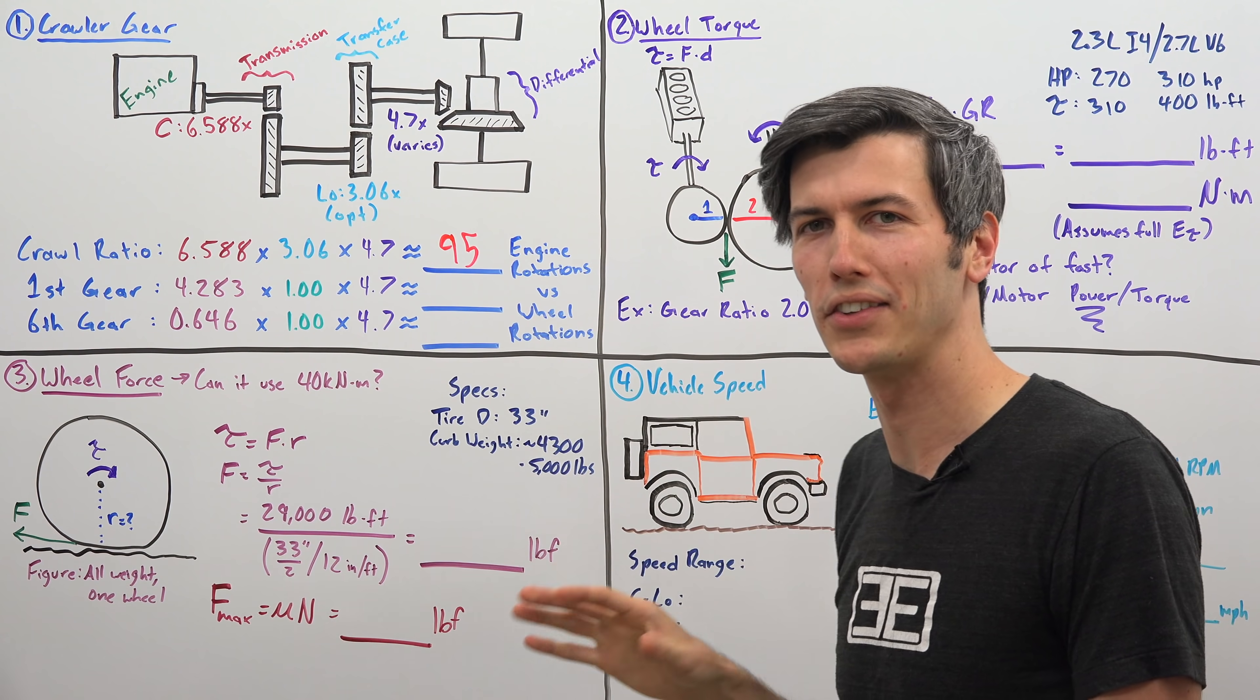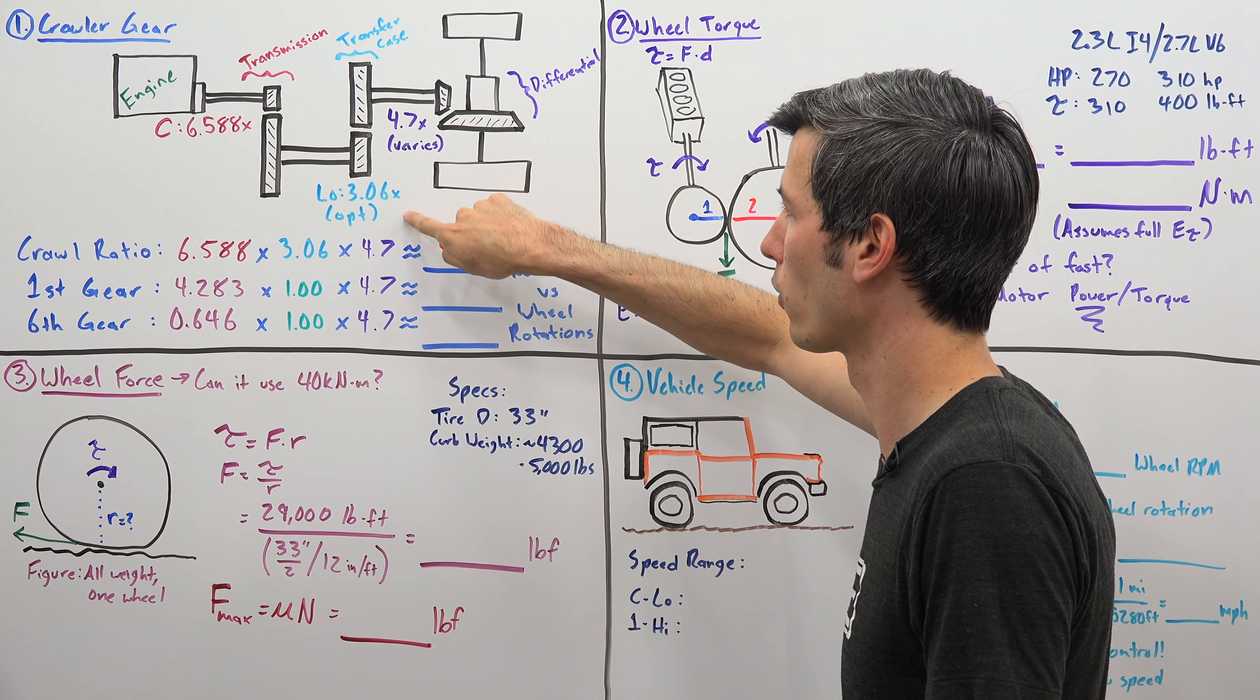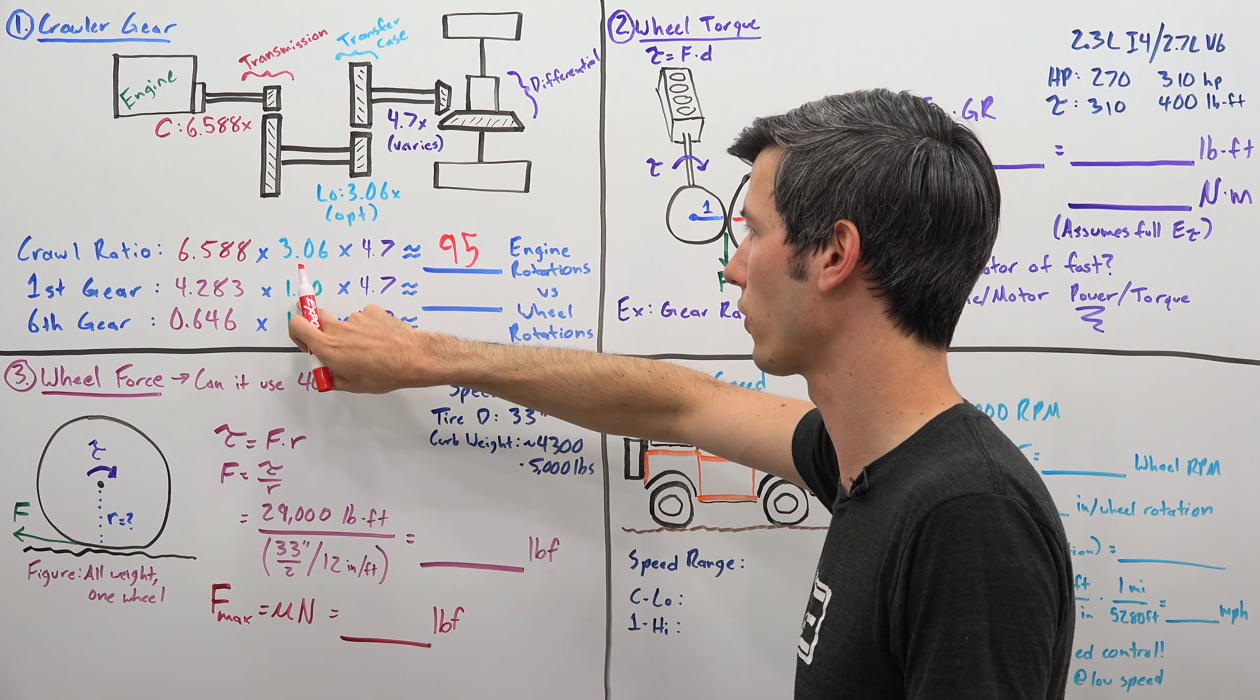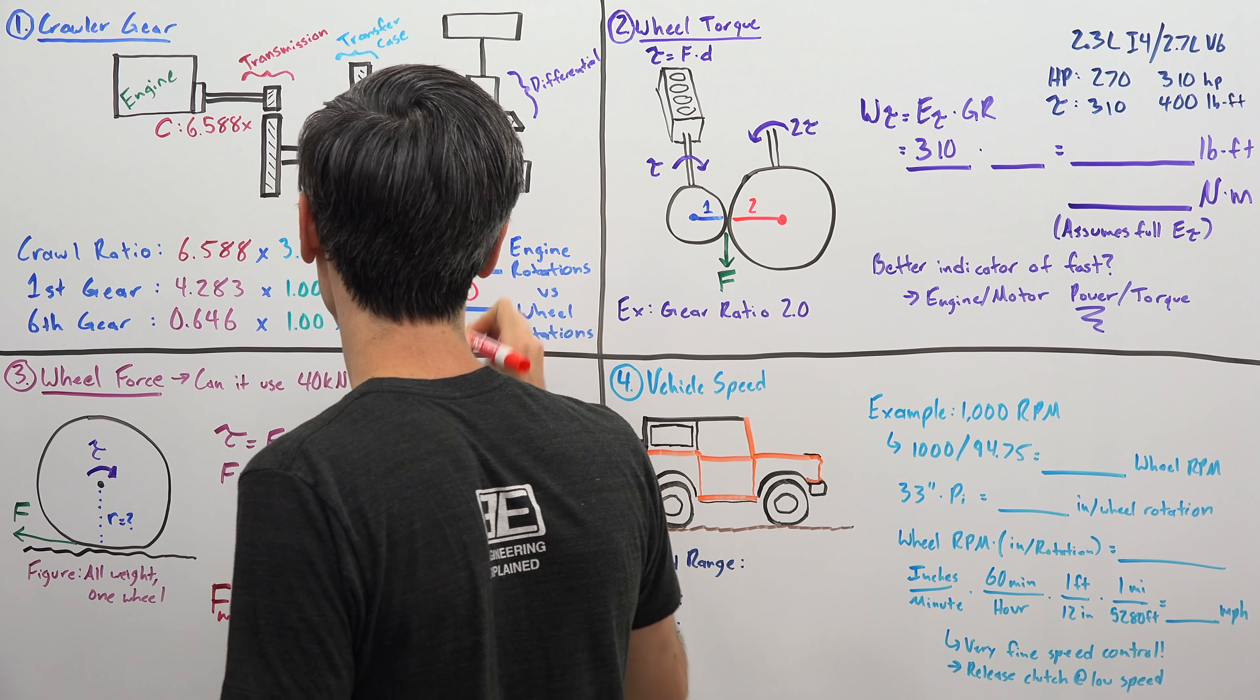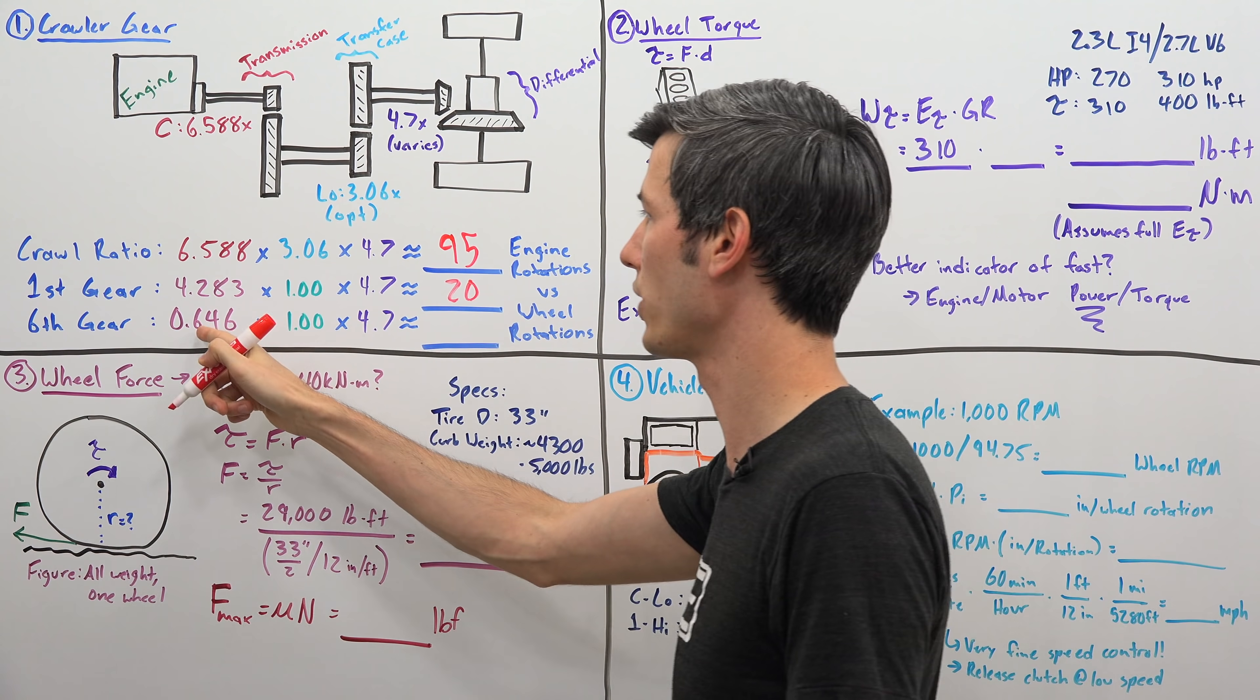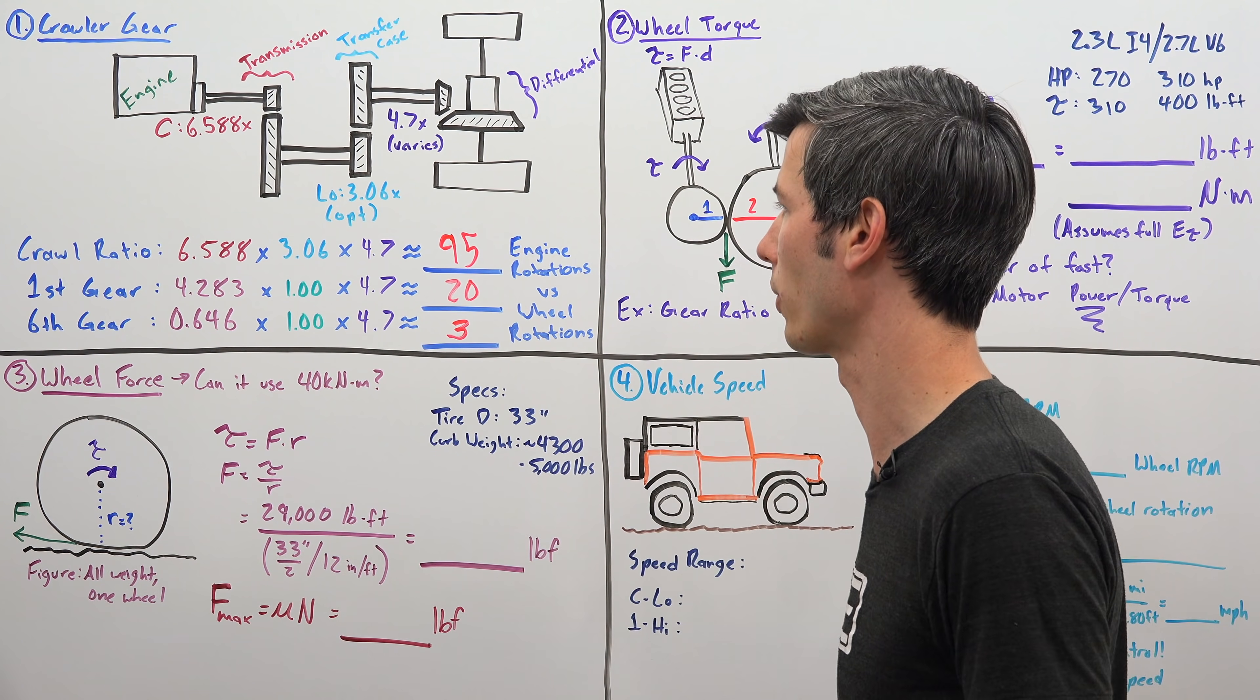Now this number is crazy high, so to give you context, let's analyze first gear and sixth gear in a transmission like this, however in 4 high rather than 4 low, meaning we just have a 1 to 1 gear ratio in our transfer case. So first gear's ratio 4.283, multiplying that through the transfer case, just a 1 to 1 ratio, and then it's still going through that same differential, you multiply that across, first gear is typically going to be around 20 times that that engine will rotate, and then the tire will rotate once. Sixth gear, which is a ratio of 0.646, you're only getting three engine rotations for every wheel rotation, so that's of course useful when you're on the highway and traveling at much greater speeds.